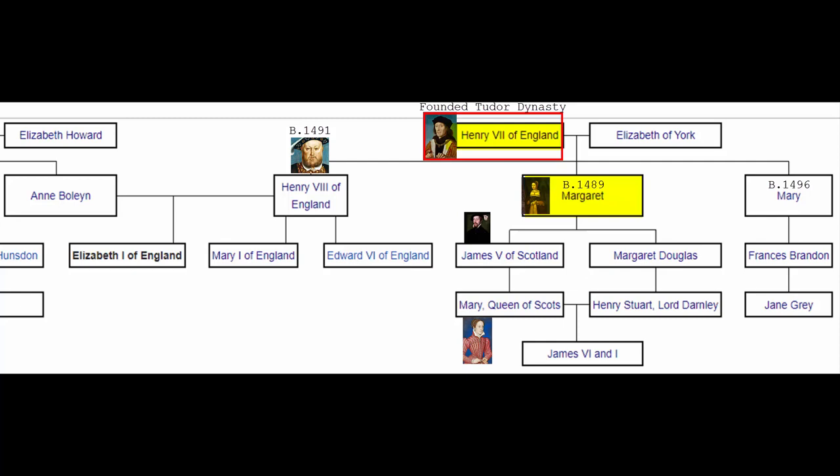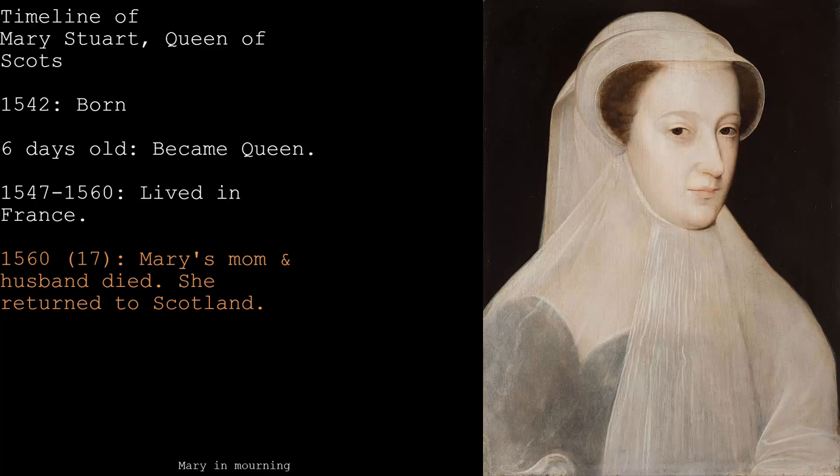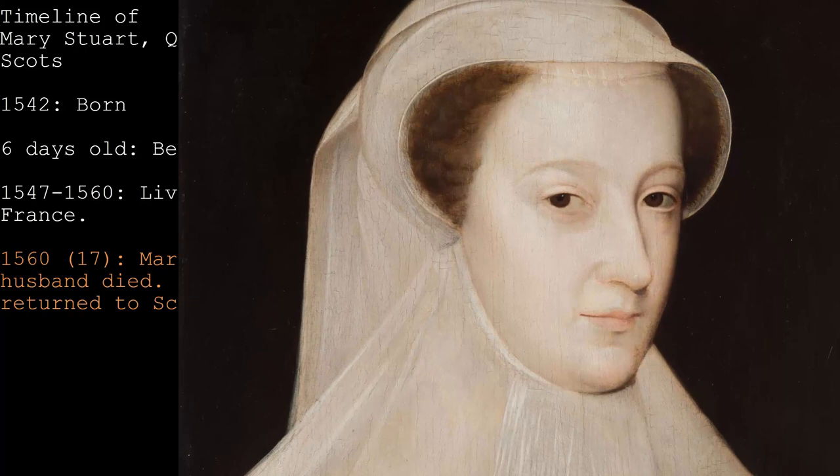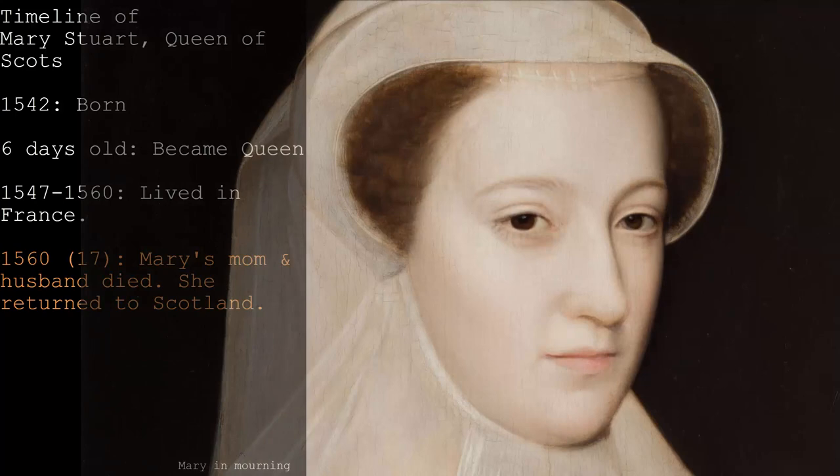In 1560, when Mary was 17, both her mother and her husband died. France was having its own problems and could no longer support Scotland as much. Mary now had to return to her native land — which she was unfamiliar with, having been away so long. Elizabeth, now queen for two years, hoped that having a relative on the throne would keep Scotland stable and protect her own position.